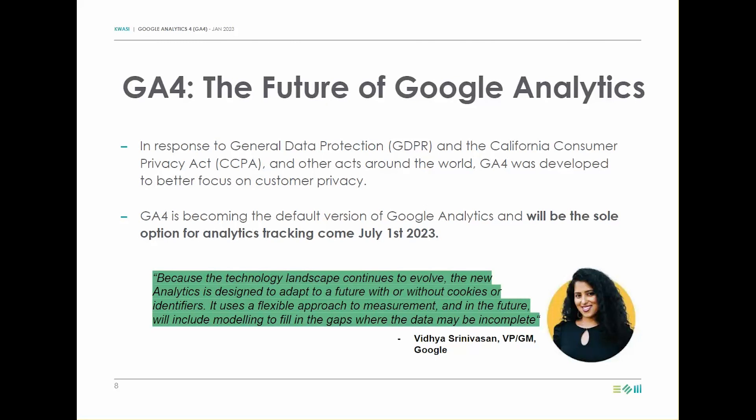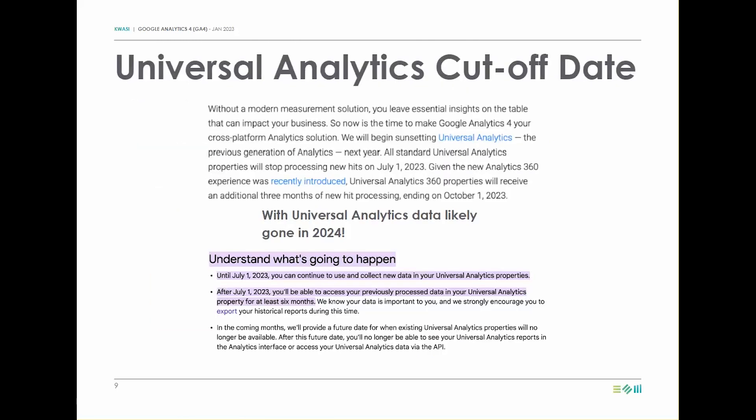This is why Universal Analytics will become obsolete and Google Analytics 4 will become the default version and sole option offered by Google. Universal Analytics will become obsolete as of July 1st, 2023. Marketers and businesses around the world are going to be panicked come July 2023, but because we're having this conversation right now, this won't be you.